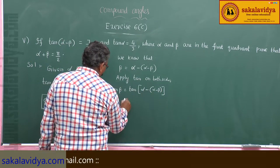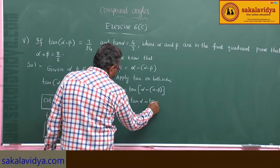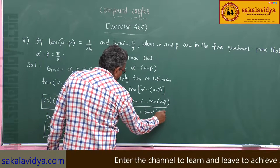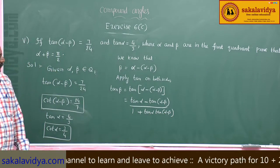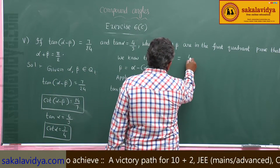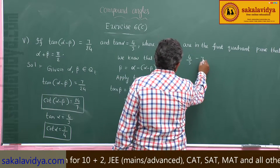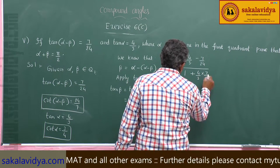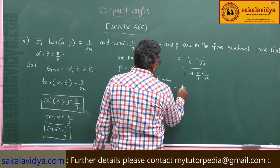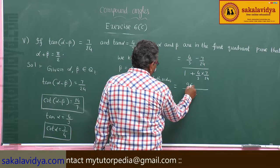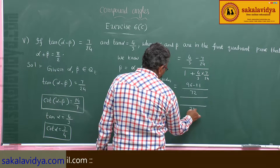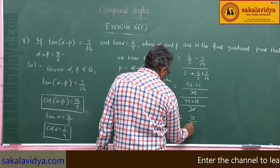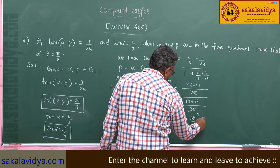Using the tan(A - B) formula: tan β = (tan α - tan(α - β)) / (1 + tan α · tan(α - β)). Substituting: tan α = 4/3, tan(α - β) = 7/24. The LCM is 72, giving (96 - 21) / (72 + 28) = 75/100 = 3/4.